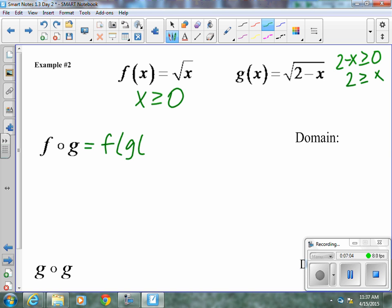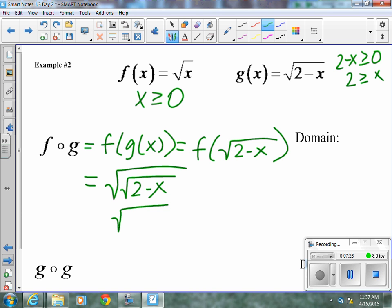So f of g of x will give us f of radical 2 minus x. When we plug that into f, it's going to be radical 2 minus x. Now, we find domain, anything under a radical is greater than or equal to 0. So our radical 2 minus x has to be greater than or equal to 0.